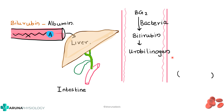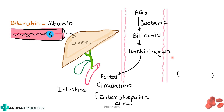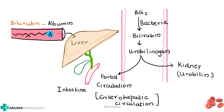This urobilinogen can take any of three routes. Either it can be taken back via the portal circulation, which is called the enterohepatic circulation; or it can be taken up by the kidney where it is excreted in urine as urobilin; or the rest goes as stercobilin, excreted in the feces.